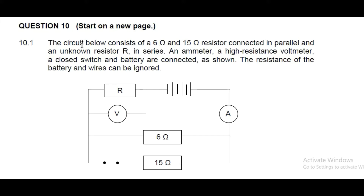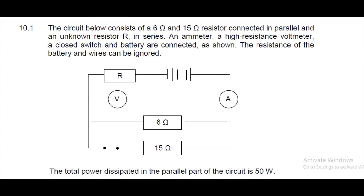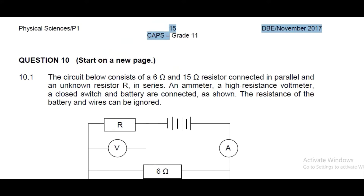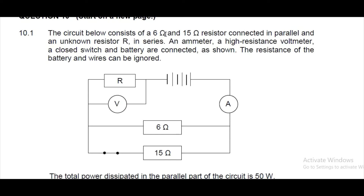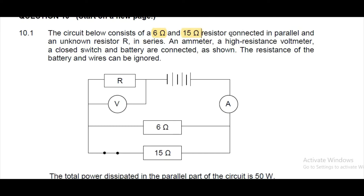We have a question here on electrostatics at Grade 11 level, taken from a Grade 11 question paper — Question 10. The circuit consists of a 6-ohm resistor and a 15-ohm resistor, both connected in parallel to each other, and an unknown resistor R which is connected in series with the two parallel resistors.